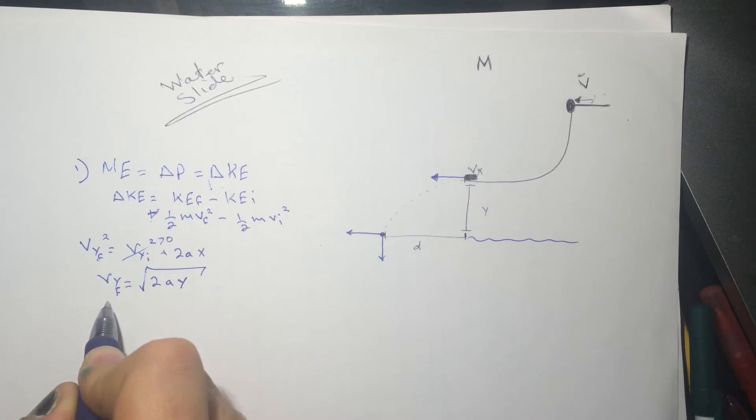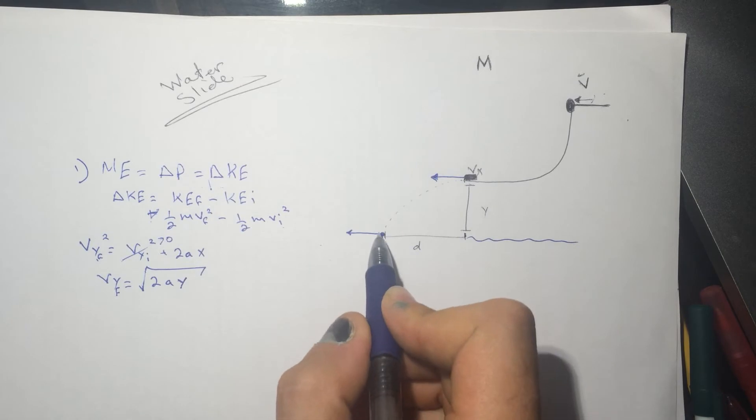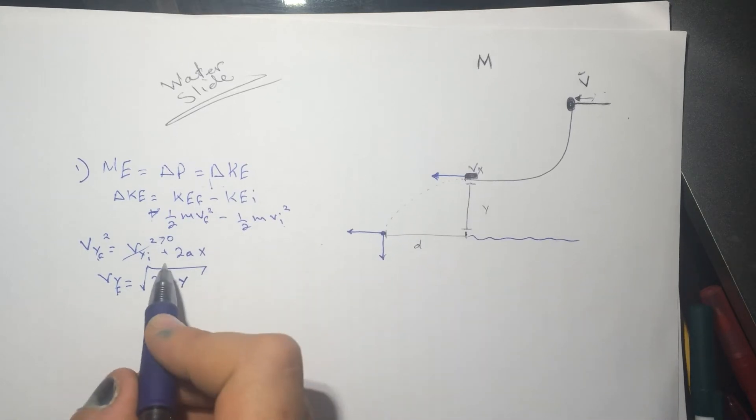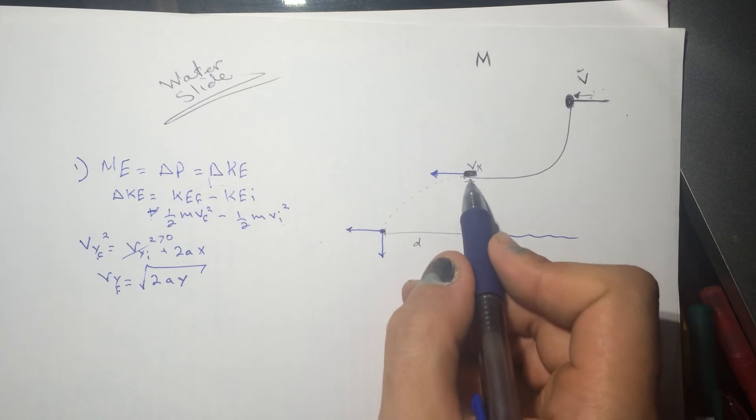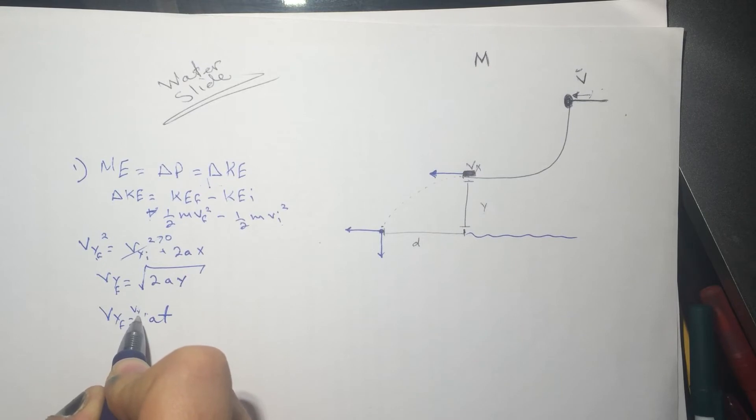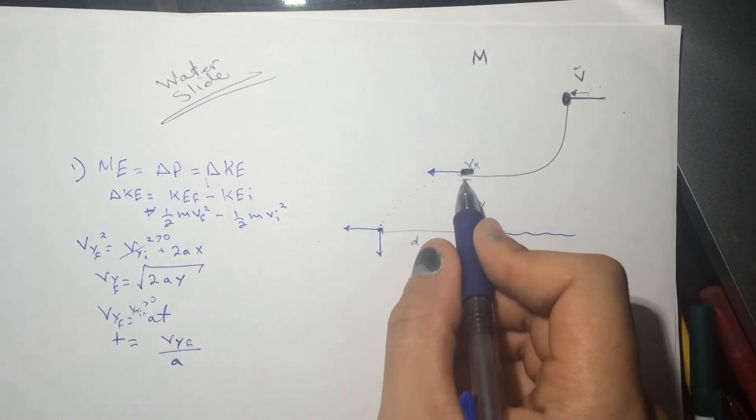So let's find the time for it to get from here to here so we can figure out what is the VX at the end here from using the D here at the time. Because both of them going from here to here is the same time from going to here to here. So let's find the time. So VY final will be equal to AT. This is plus VY initial, but we ignore this again. So time will be equal to VY final divided by A. This way we find the time for it to go from here to here.